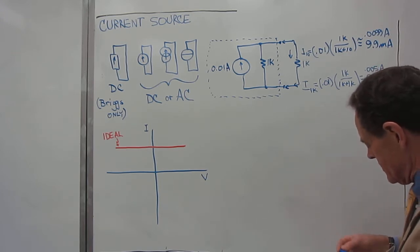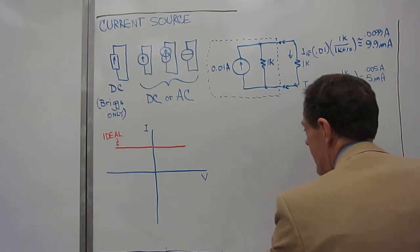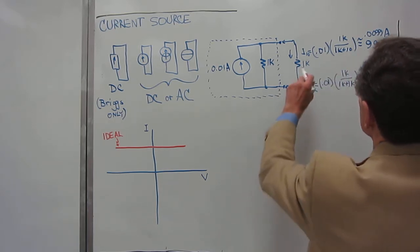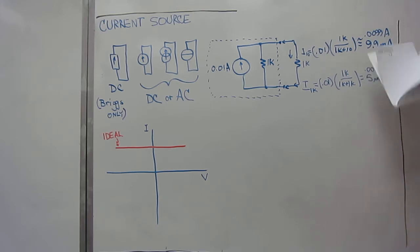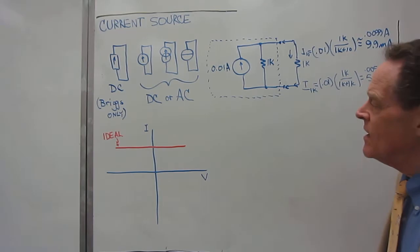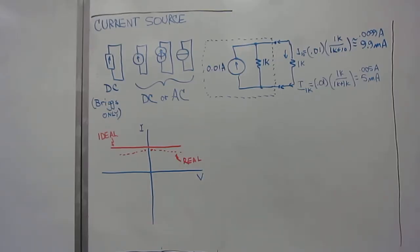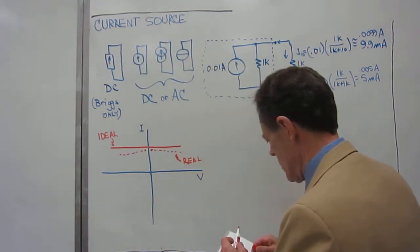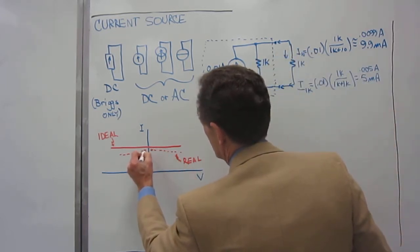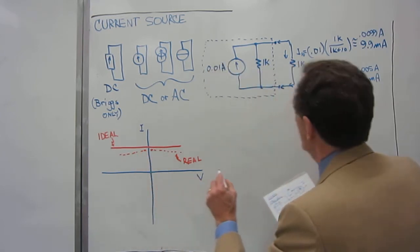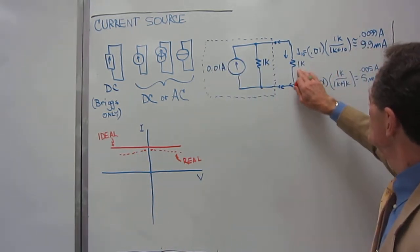And so, what does that look like on the IV plot? Well, if we have 9.9 milliamps going through 10 ohms, so that would be 0.099 volts, so it's less than a tenth of a volt, so it would be here. Okay, so we will have less than a tenth of a volt, and so we'll have points here very close to this point.